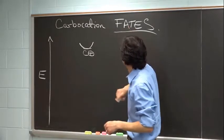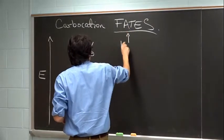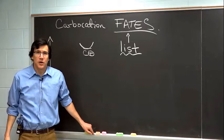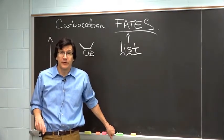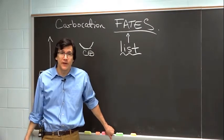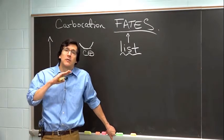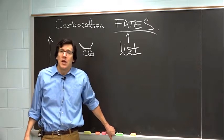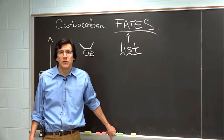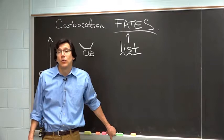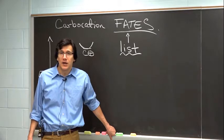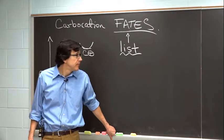So I want to start thinking about our list of carbocation fates. We will have a grand total of three things on this list by the end of the semester. And that will pretty much be it as far as carbocation fates are concerned. So it's not like we have to know 25 different carbocation fates. So I want you to think about what you know so far about organic chemistry and write down carbocation fate number one. So you've seen a reaction that proceeds through a carbocation. Please think about what that reaction is and what happens to the carbocation. What is the fate of that carbocation in that reaction?